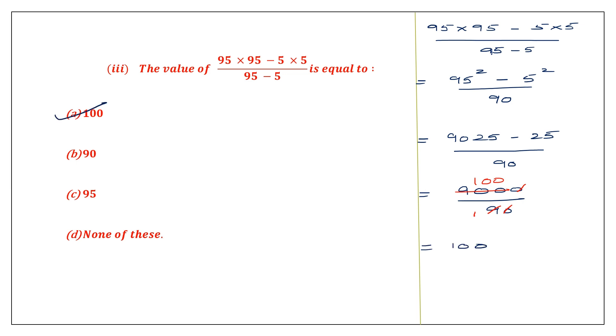This is one direct way to solve it. Alternatively, you can recognise 95 squared minus 5 squared as the difference of squares — use the identity a squared minus b squared and expand it to get the same answer.